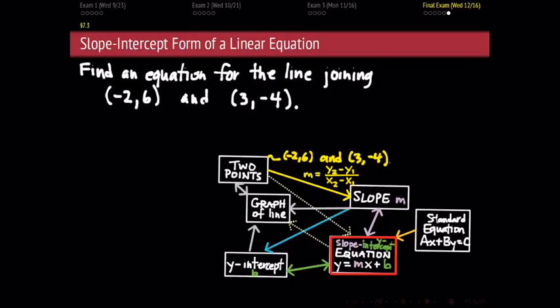Using that formula and the reasoning from this example, we found that the slope of the line joining our two points is negative 2. So right away in our slope-intercept equation we can substitute negative 2 in for m, the slope. Now we've put the slope into its spot, but we're not done — we still haven't figured out the y-intercept.